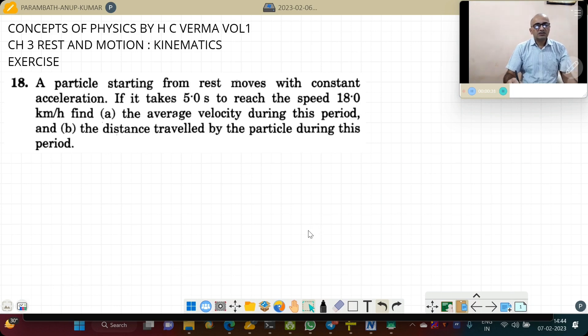So students, first of all, we have to identify which equation of motion will be the most convenient to use in this situation. So let us write down what is given to us. Particle starting from rest means initial velocity u is 0.